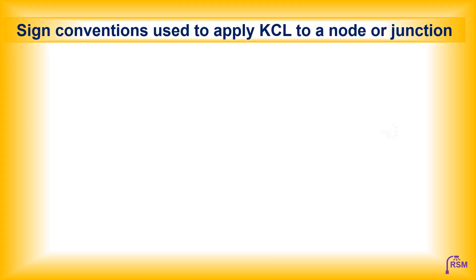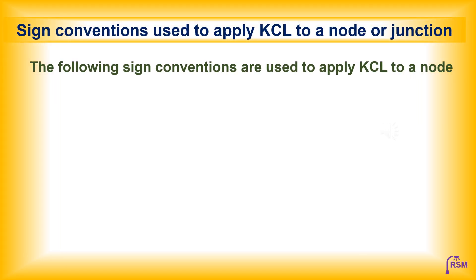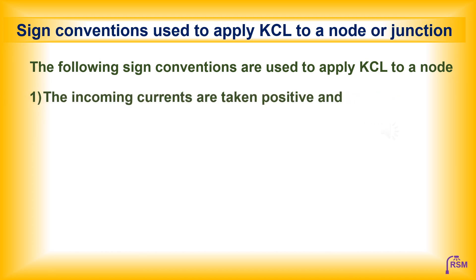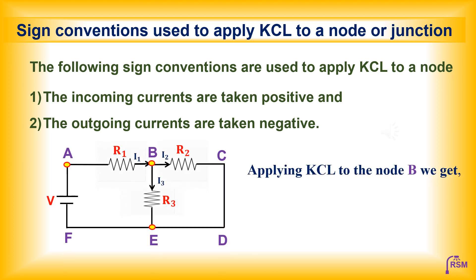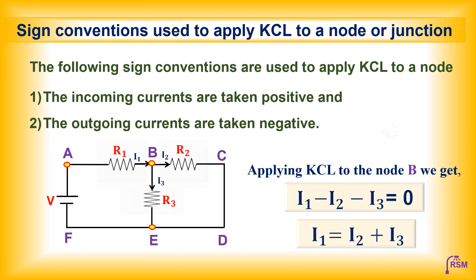The sign conventions used to apply KCL to a node are: incoming currents are taken positive and outgoing currents are taken negative. For example, if you apply KCL to node B of the circuit shown here, you get I1 minus I2 minus I3 is equal to zero. Here I1 is positive because it is an incoming current, whereas I2 and I3 are negative because they are outgoing currents away from node B. The equation can also be written as I1 is equal to I2 plus I3.